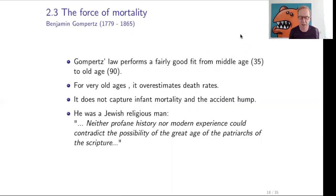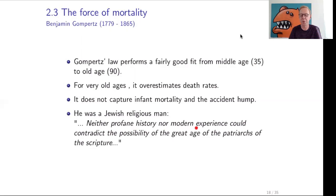Gompertz's law does not capture infant mortality (higher mortality in the first years after birth) or the accident hump (higher mortality, especially for males, aged 18 to 25). It is also notable that Gompertz was Jewish and very religious, and tried to combine his science with his religion. He said: neither profane history nor modern experience could contradict the possibility of the great ages of the Patriarchs of Scripture. His law does not exclude people living hundreds of years, over 100 or even 150.